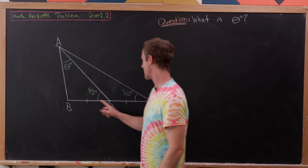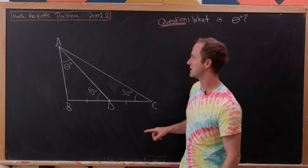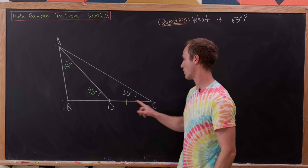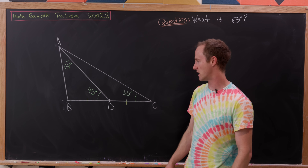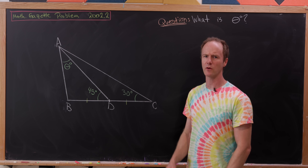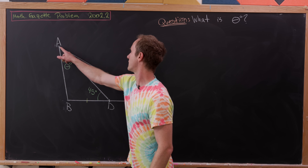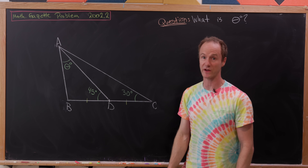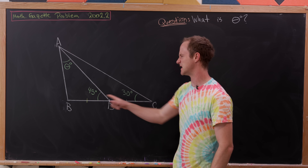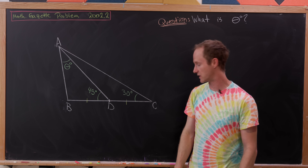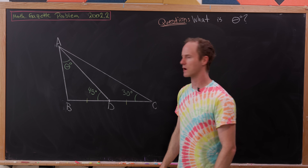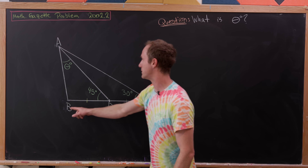We've got triangle ABC, and from A there's a line segment that intersects the midpoint of BC. Upon doing that intersection, you get the following angle measures: the measure of angle ADB is 45 degrees, and the measure of angle ACD (or ACB) is 30 degrees. The question is: what is theta degrees, where theta is the angle measure BAD?